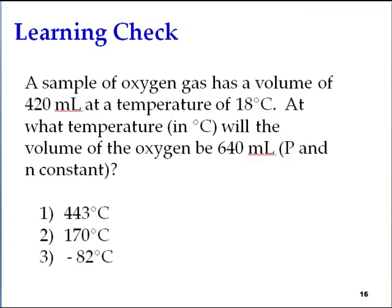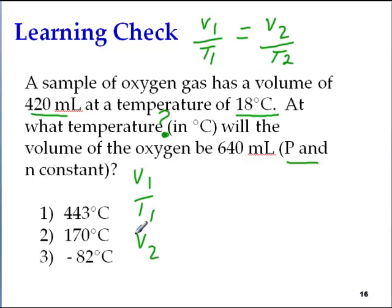Let's practice one more problem. A sample of oxygen gas has a volume of 420 mL at a temperature of 18 degrees Celsius. At what temperature will the volume of the gas be at certain volume? Notice P and N are constant so that's a hint that this is going to be Charles' Law. So I write down my mathematical equation V1 over T1 equals V2 over T2.